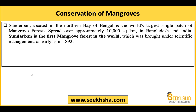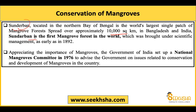Mangroves mein India bhi kaafi rich hai. Sundarbans, jo basically Bay of Bengal region ke andar located hai, ye duniya ka sabse bada single continuous patch of mangrove forest hai - around 10,000 square kilometer ka area hai, aur Bangladesh aur India dono mein aata hai. Sundarbans duniya ka known mangrove forest hai, aur 1892 mein angrezon ke zamaane mein scientific management mein laya gaya tha. Mangroves ki importance ko realize karte huye Bharat Sarkar ne ek National Mangrove Committee bhi banai thi 1976 mein, jo sarkar ko conservation aur development se related issues mein advise karti hai.